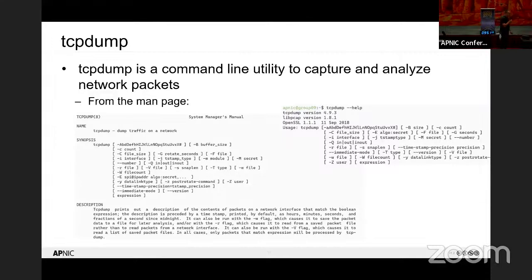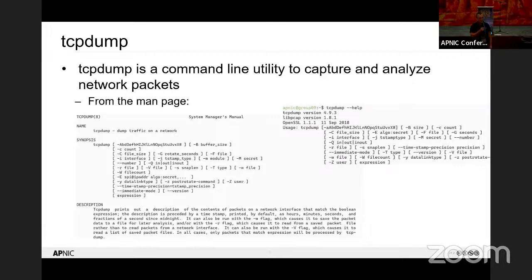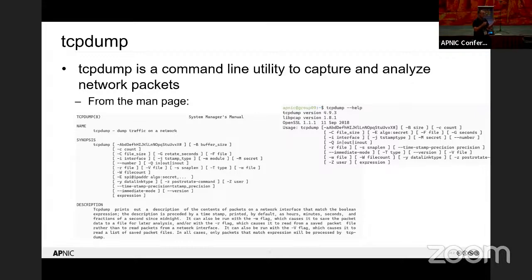tcpdump is usually the go-to tool for many network engineers. There are lots of help and tutorials available online. With tcpdump you can use dash W to write to a file, dash R to read a packet capture, then apply display filters, and use extension tools inside Linux to filter, sort, and get the top 10 talkers. There's a lab exercise available for that.